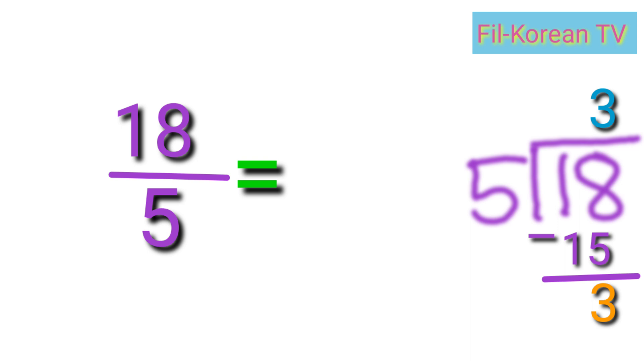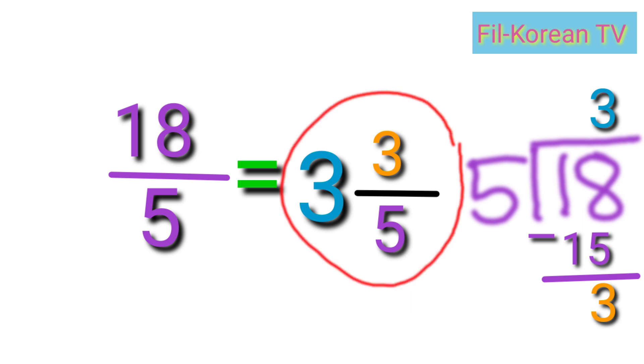Let's write the answer. The quotient three is the whole number, and the remainder three is the numerator. Then, the denominator is still five. The answer is three and three-fifths.